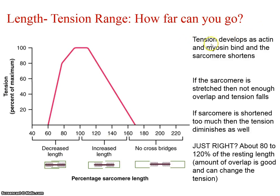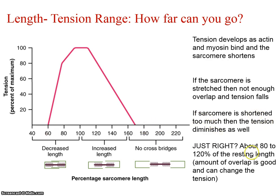What this chart helps us grasp — not asking you questions about at what point you're optimal — is to remember that the muscle is a very physical and straightforward thing. Force develops as actin and myosin bind and the sarcomere shortens. If it is stretched, there's not enough overlap and tension falls. If the sarcomere is too short, it's shortened too much and tension diminishes as well. That's the take-home message.